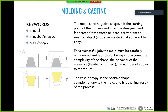For a successful job, the mold must be carefully engineered and fabricated. You have to take into account the complexity of the shape, the behavior of the materials — whether they are flexible or stiff — and also how many copies you are going to make, only one or more. The cast, or the copy, is the positive shape, complementary to the mold, and it is the final result of the process.